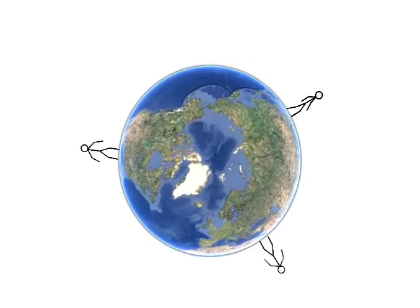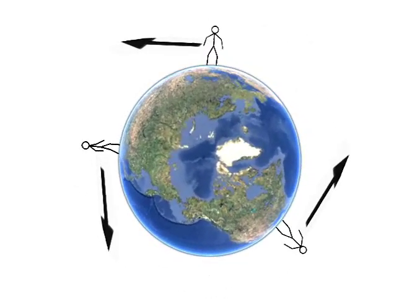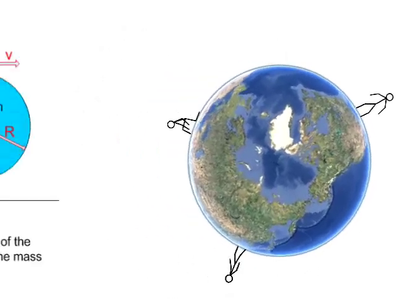Well, the same principle applies to us staying on the ground. As we are spinning around the earth, we essentially want to keep going in a straight line. However, there's no car door keeping us in place, but it is gravity.